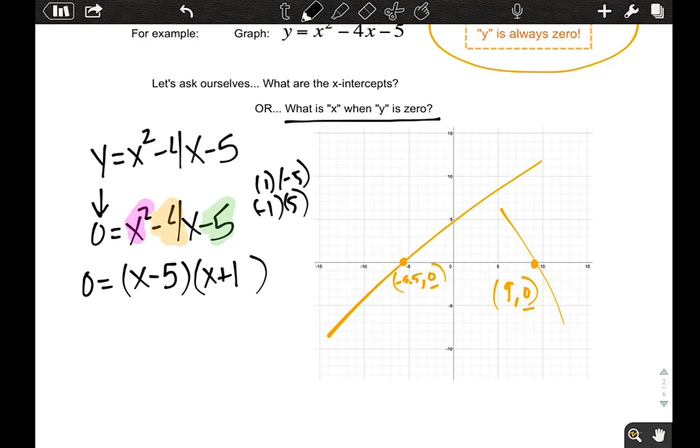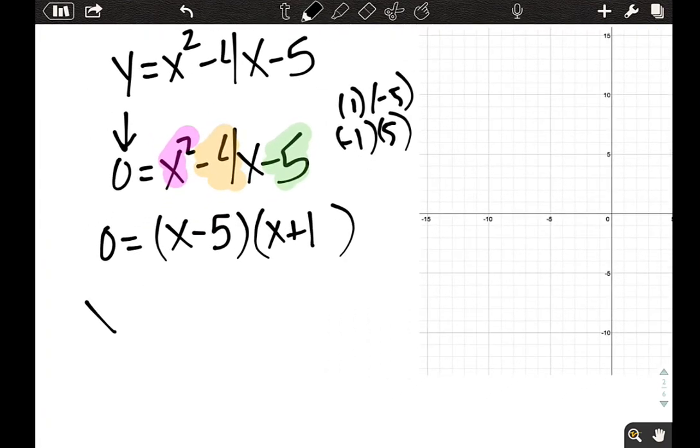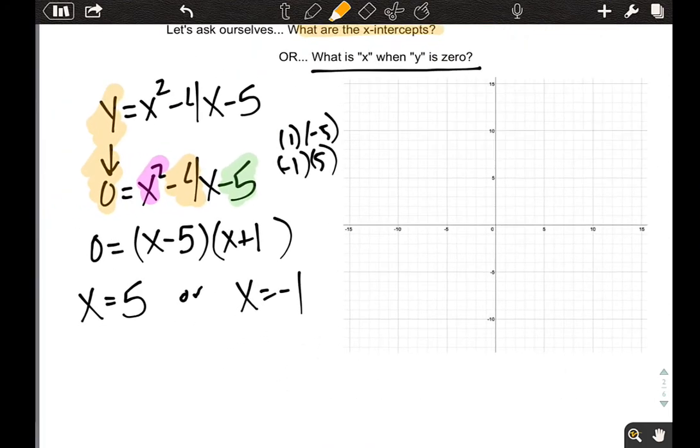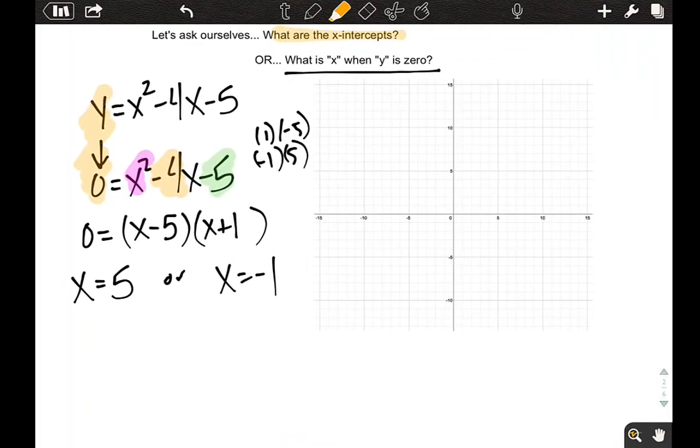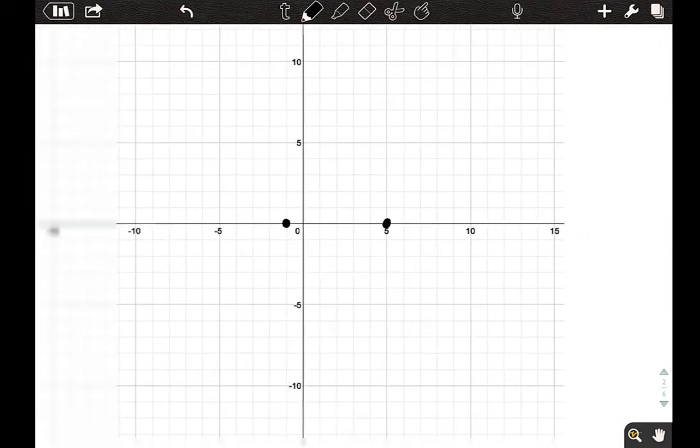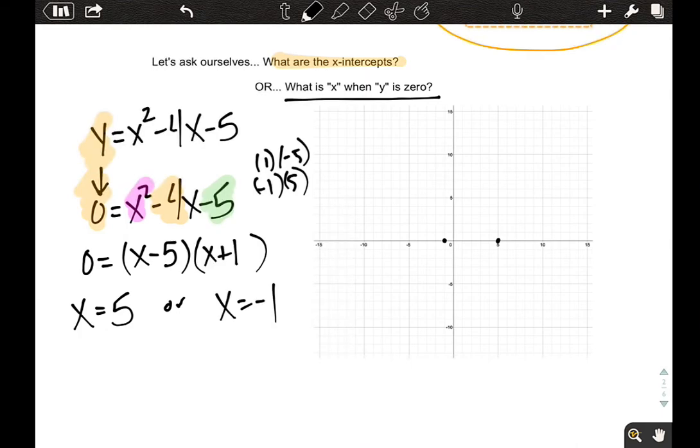So, what are the zeros, you might start to call them, or the solutions, or simply the x-intercepts? Well, this would have to be when x is positive 5 or when x is negative 1. Those would be the solutions. Well, they're also, ladies and gentlemen, they are also the x-intercepts because they are the values when we turn y into 0 over here. So what does that mean for our parabola? What does that mean for our shape? We have x is 5 and negative 1. Will that help us graph? Most definitely.